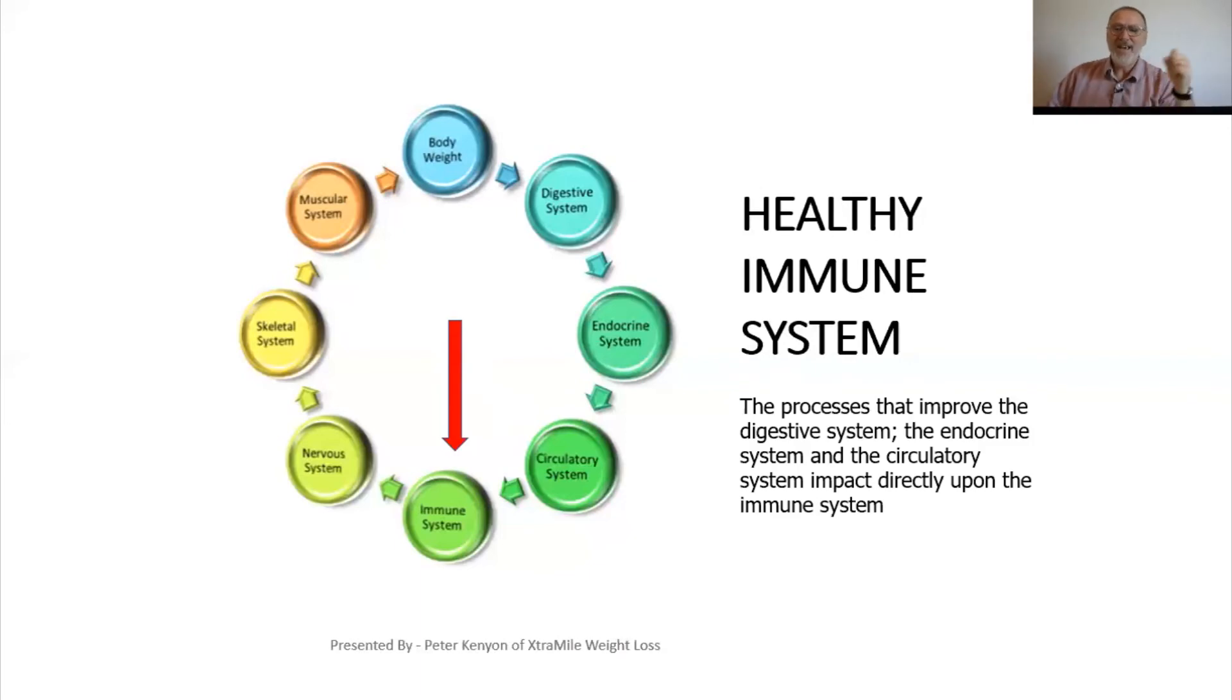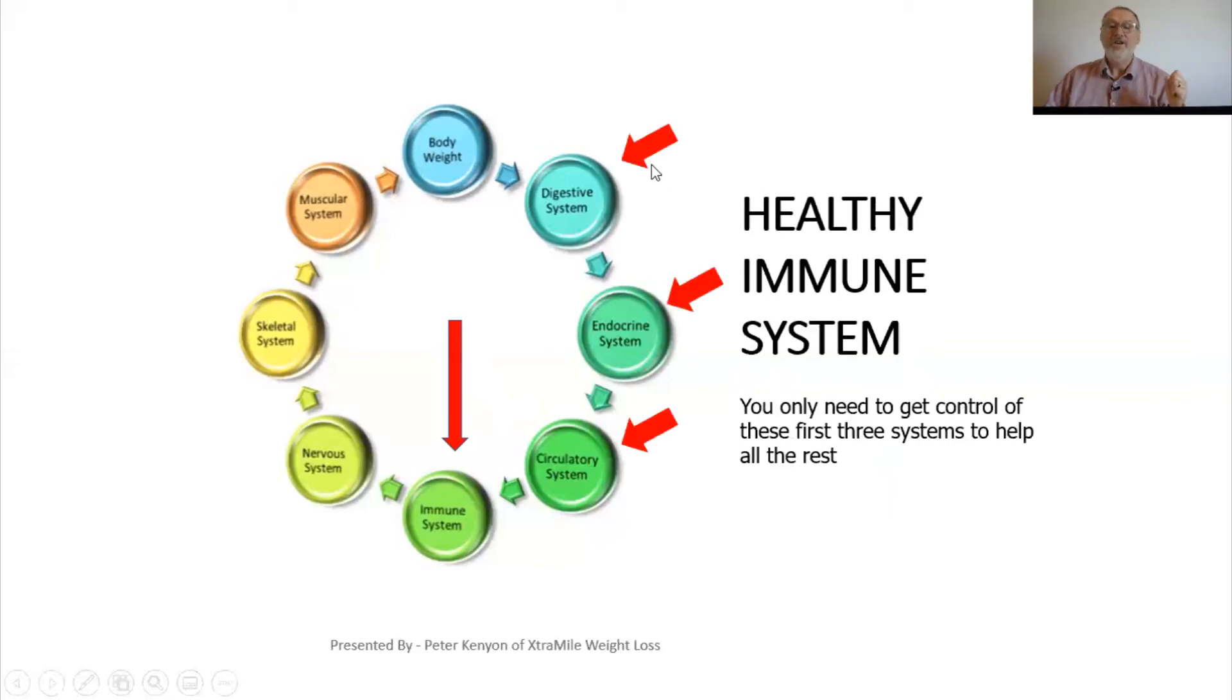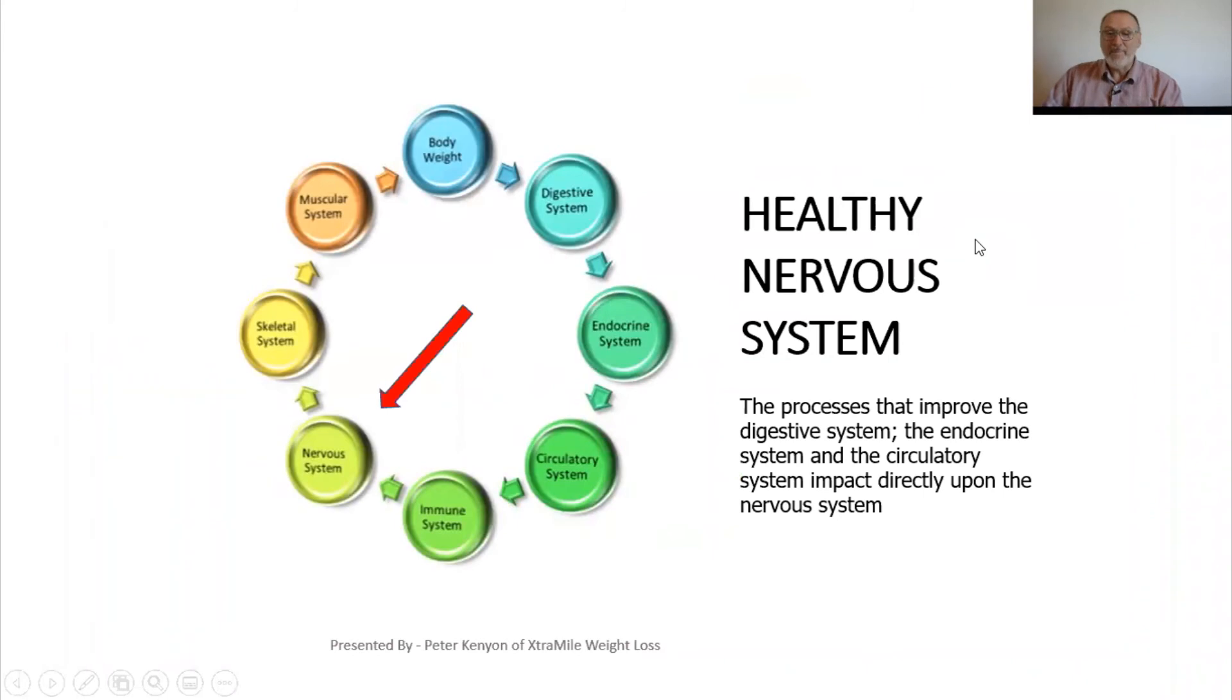Now, the important thing is the processes that improve the digestive system, the endocrine system and the circulatory system have an impact directly on the immune system. You only need to get control of these first three systems to help all the rest of the systems. And the processes that improve the digestive system, the endocrine system and the circulatory system have a direct impact upon the nervous system.